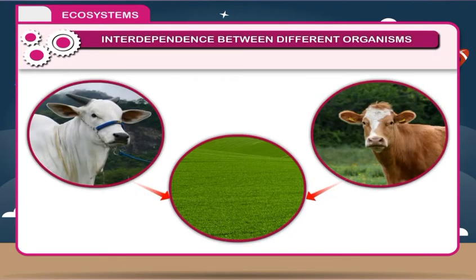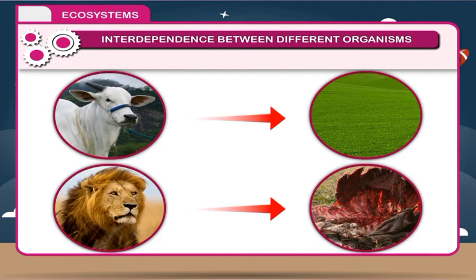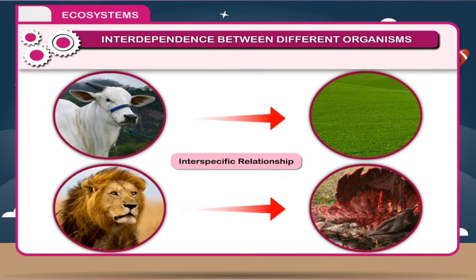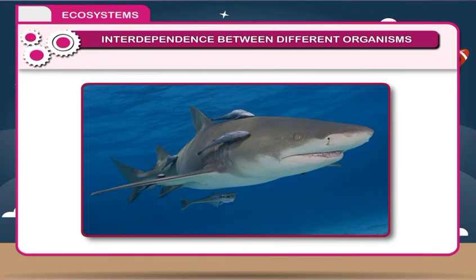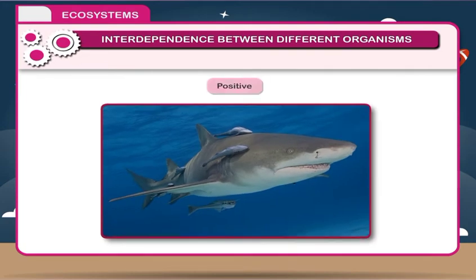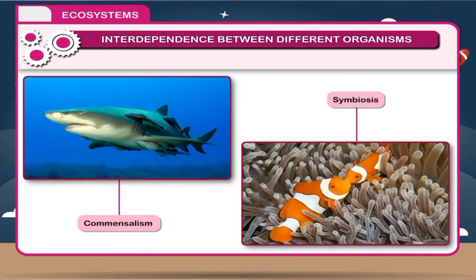Interdependence between Different Organisms: Relations between organisms of the same species are called intraspecific relationships. When two or more different species depend on each other, it is called an interspecific relationship. Interspecific relationships may be positive or negative. When one species helps another, or when one or both species are benefited, the interaction is called positive. For example, commensalism and symbiosis are examples of positive interactions.